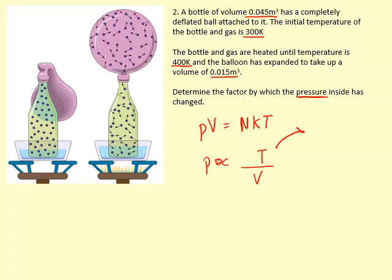What's happened to temperature? The temperature has gone to 400 from 300, so that's times 4 over 3 increase. With volume at the bottom, well it's gone from 0.045 but then it's increased by 0.015, and the initial volume was 0.045.